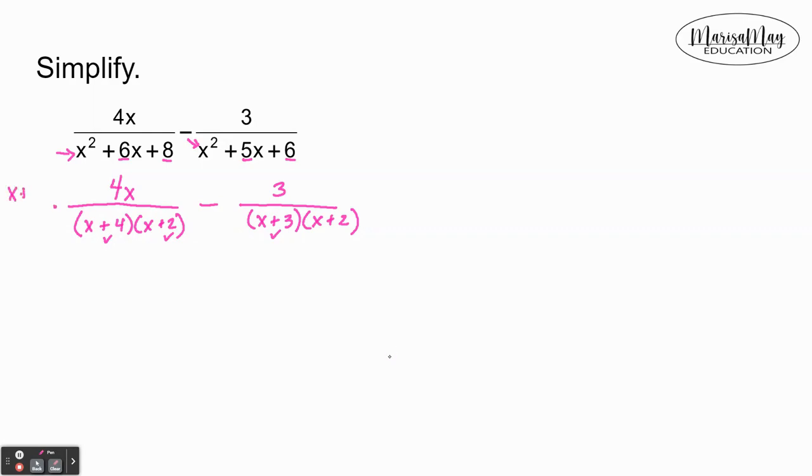So I'm gonna multiply the top by (x + 3) and the bottom by (x + 3). I'll go ahead and put parentheses around it. And I'm gonna multiply the second fraction by what's missing which is the (x + 4). Again, I'm gonna put parentheses around it.